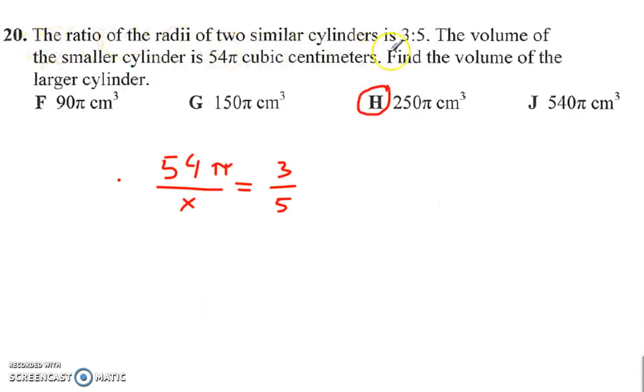The ratio here is 3 to 5, so the smaller one is 3, the larger one is 5. The volume of the smaller cylinder is 54, so smaller one on top, larger one on bottom. 3 to 5, 54 to x. Set up your proportion, cross-multiply to solve, and you get 250.